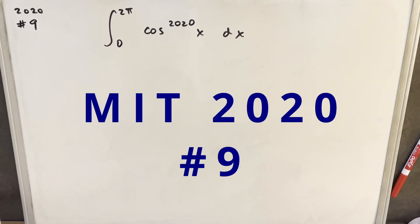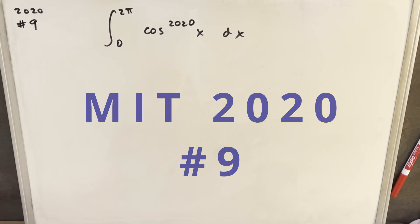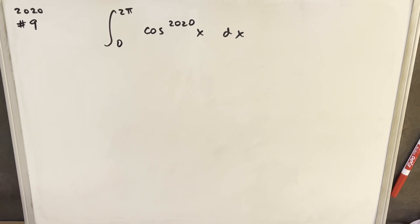Okay, today we've got a really interesting integral on the board. We have something from 2020 MIT integration bee problem number nine. We have the integral from zero to two pi of cosine to the 2020x dx.